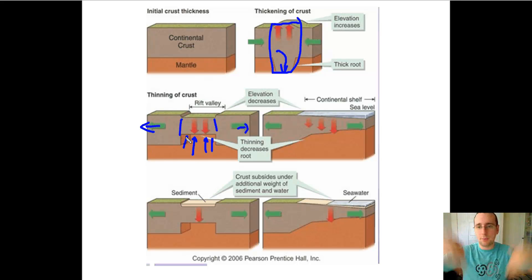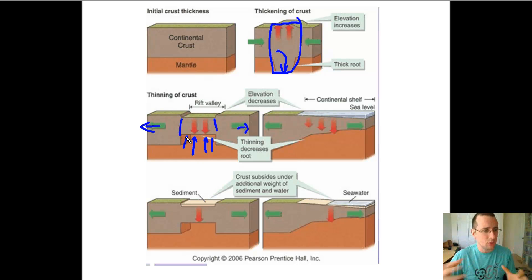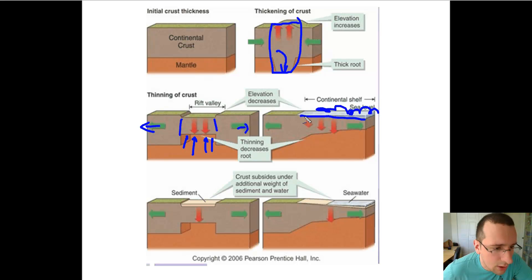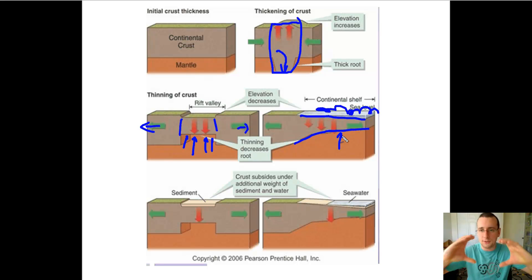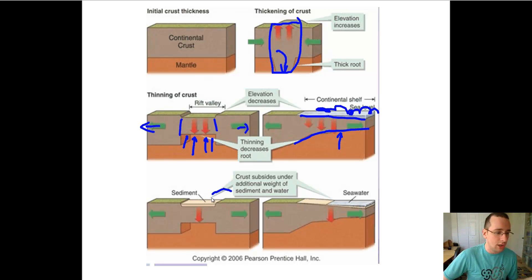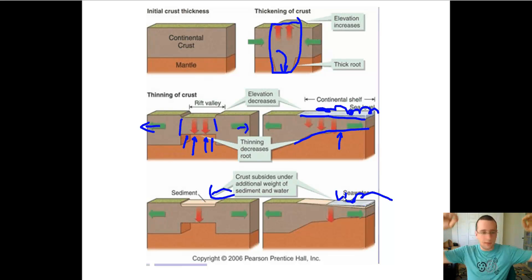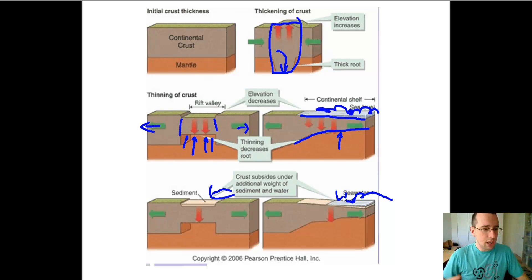If you thin out the top, it will raise up the bottom; if you raise up the top, it will sink into the bottom. Consider the continental shelf — erosion is thinning out the continental shelf, causing the crust to thin out, which decreases the root through isostatic adjustment as the buoyancy force pushes the material to float higher. Conversely, if you add sediments or material to the crust, you add more weight, and the crust extends deeper with deeper roots. The crust will subside when weight is added and uplift when weight is removed.